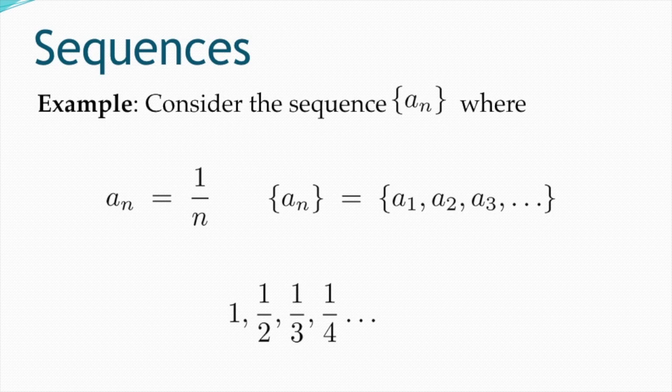Consider the sequence a subscript n where a(n) equals 1 divided by n. The terms a1, a2, a3 are calculated as follows: when n=1, a1 = 1/1 = 1; when n=2, a2 = 1/2; when n=3, a3 = 1/3.